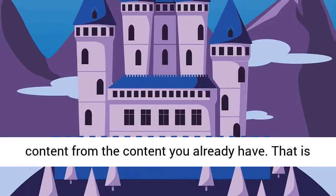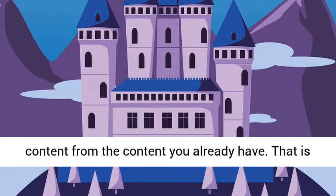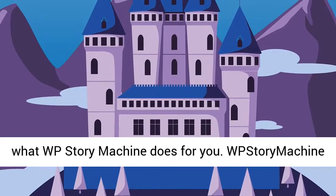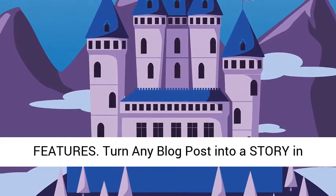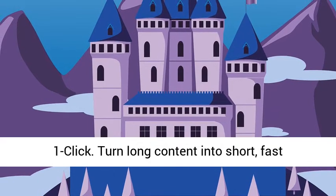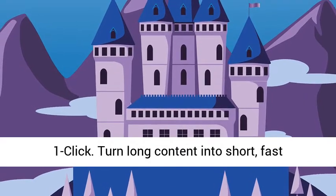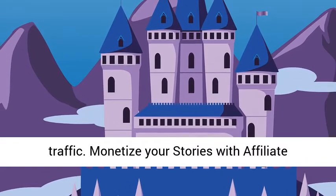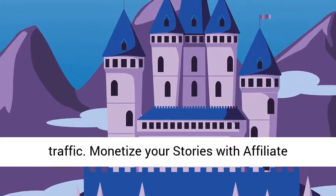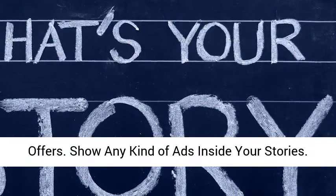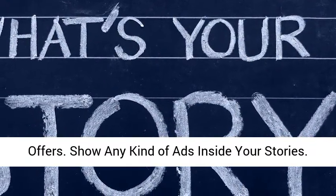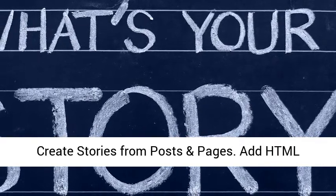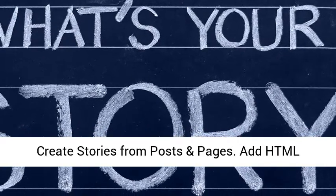That is what WP Story Machine does for you. Key features: Turn any blog post into a story in one click. Turn long content into short, fast-consuming content for mobile devices and get more traffic. Monetize your stories with affiliate offers. Show any kind of ads inside your stories. Add call-to-action buttons and links inside stories. Create stories from posts and pages. Add HTML content to your stories.